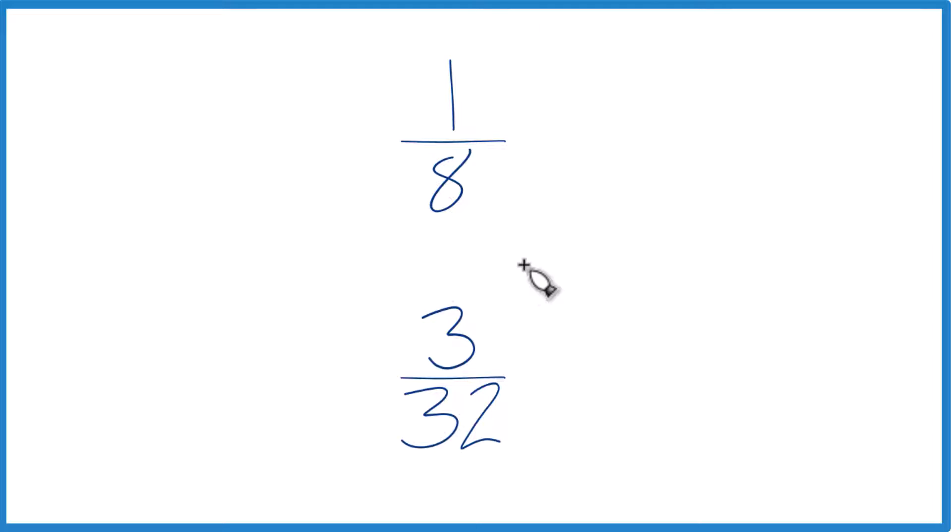Another way to do this is find a common denominator. Right now we have 8 and 32. But if we had the same denominator, we could just compare the numerators and we'd be done.